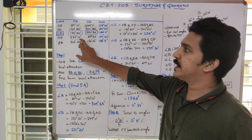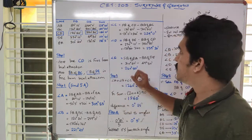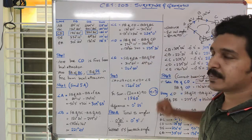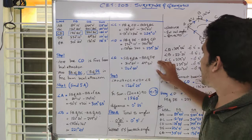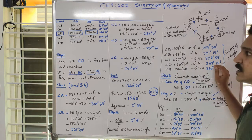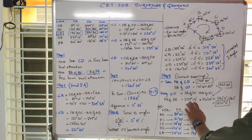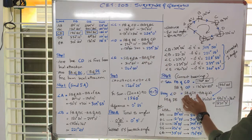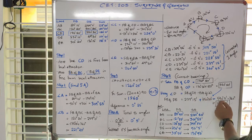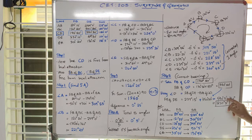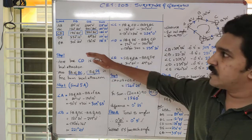If we know the backbearing of CD, we can find the forebearing of DE. We take angle D, which uses forebearing of DE minus the backbearing of CD. We substitute the corrected angle D value of 213 degrees 15 minutes — not the original erroneous value. So, angle D plus backbearing of CD equals 213 degrees 15 minutes plus 350 degrees 50 minutes, giving 590 degrees 5 minutes. Because it is greater than 360, we subtract 360, giving 230 degrees 5 minutes. The given value was 230 degrees 10 minutes, so there is an error — 230 degrees 5 minutes is the correct value.